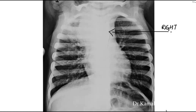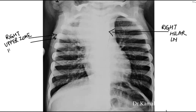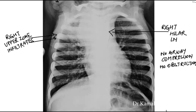In this particular radiogram, you have a lymph node in the right paratracheal region and a non-homogenous opacity in the right upper zone. There is no significant compression or obstruction of the airway. This parenchymal lesion, which is the Ghon's focus, and the lymph node together form what we call the primary disease.